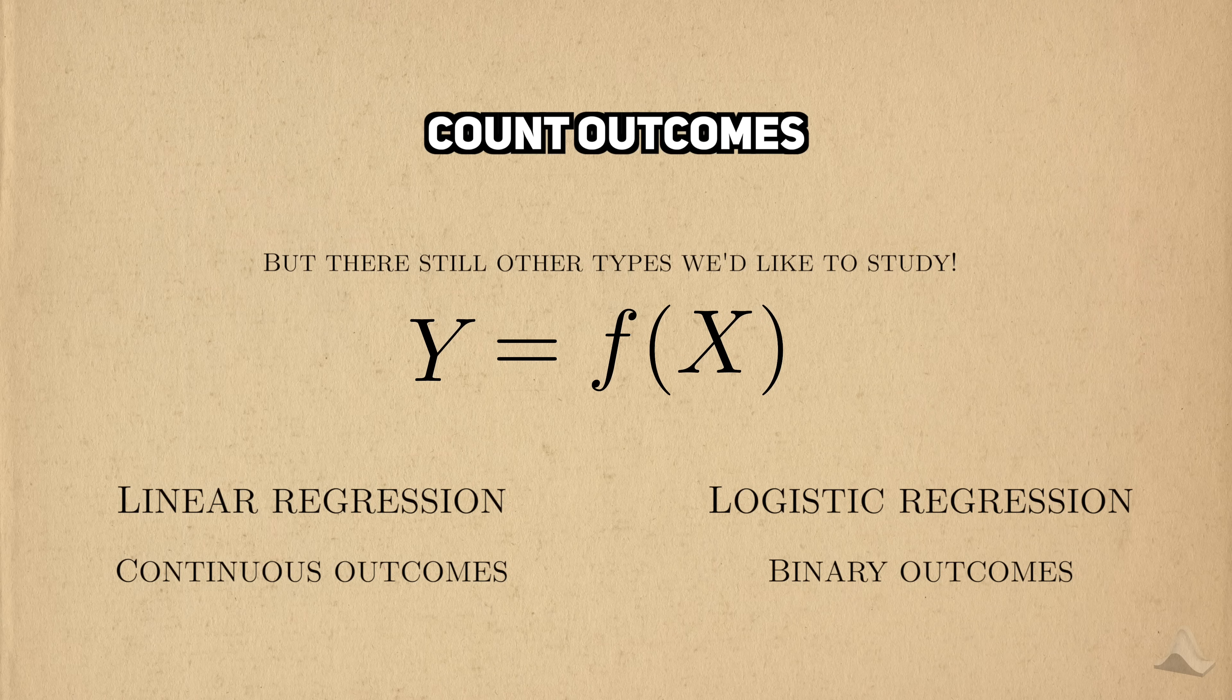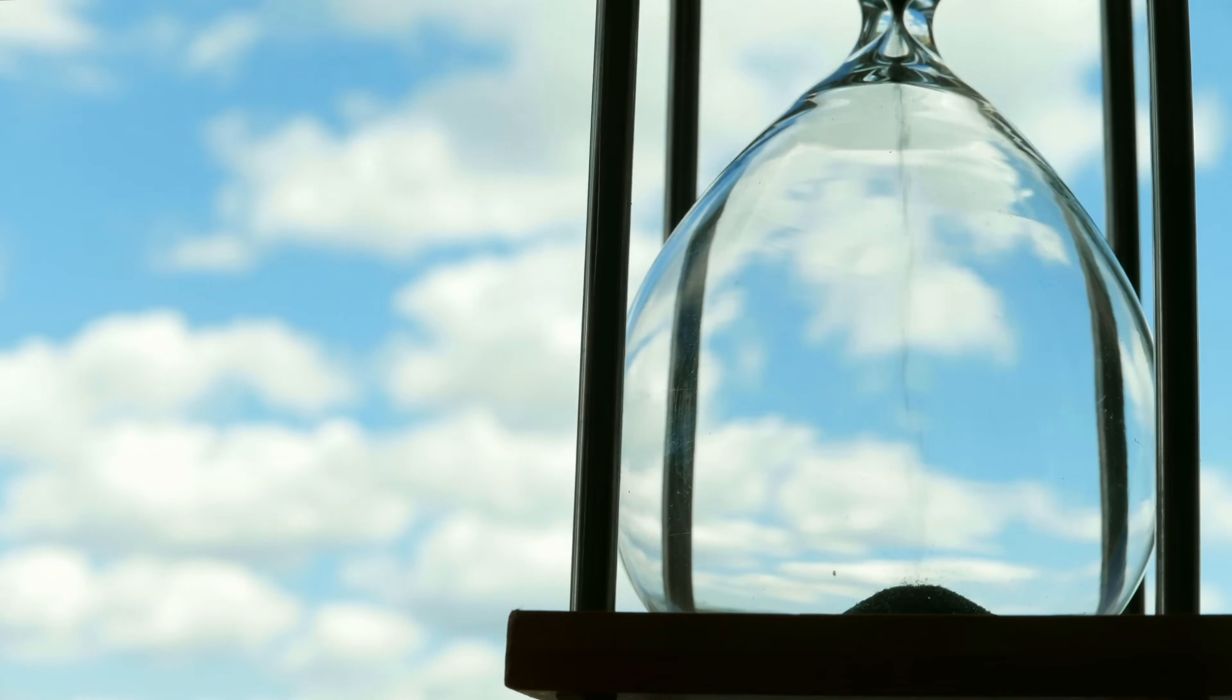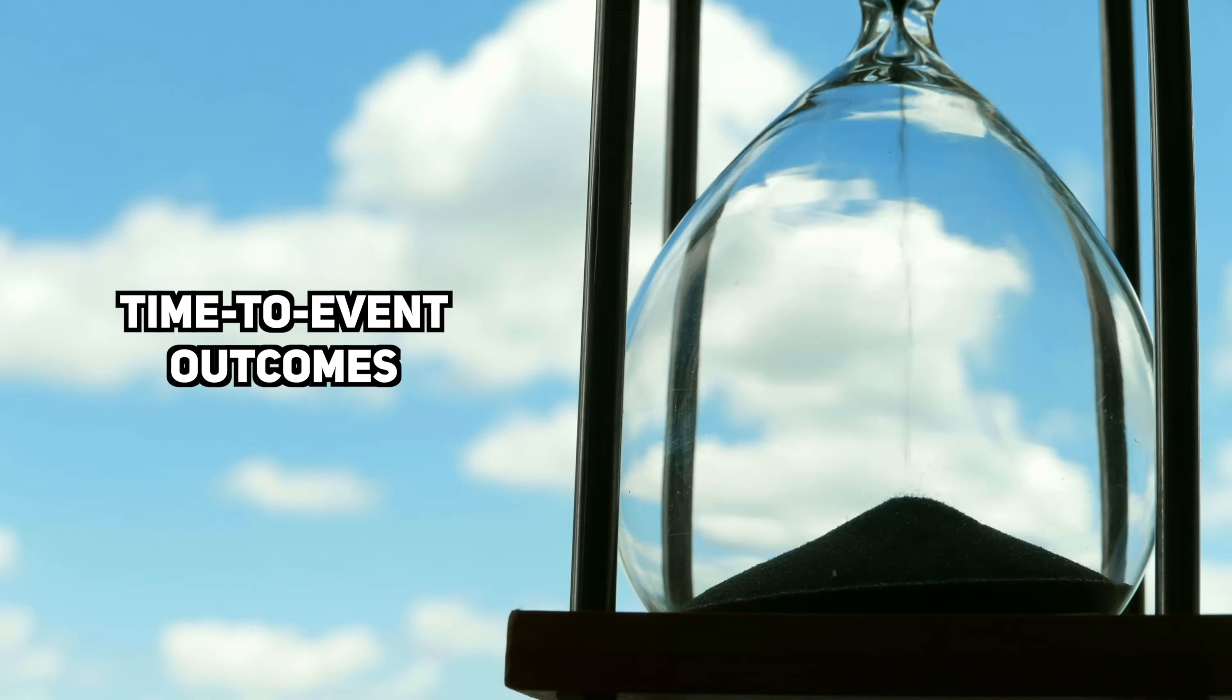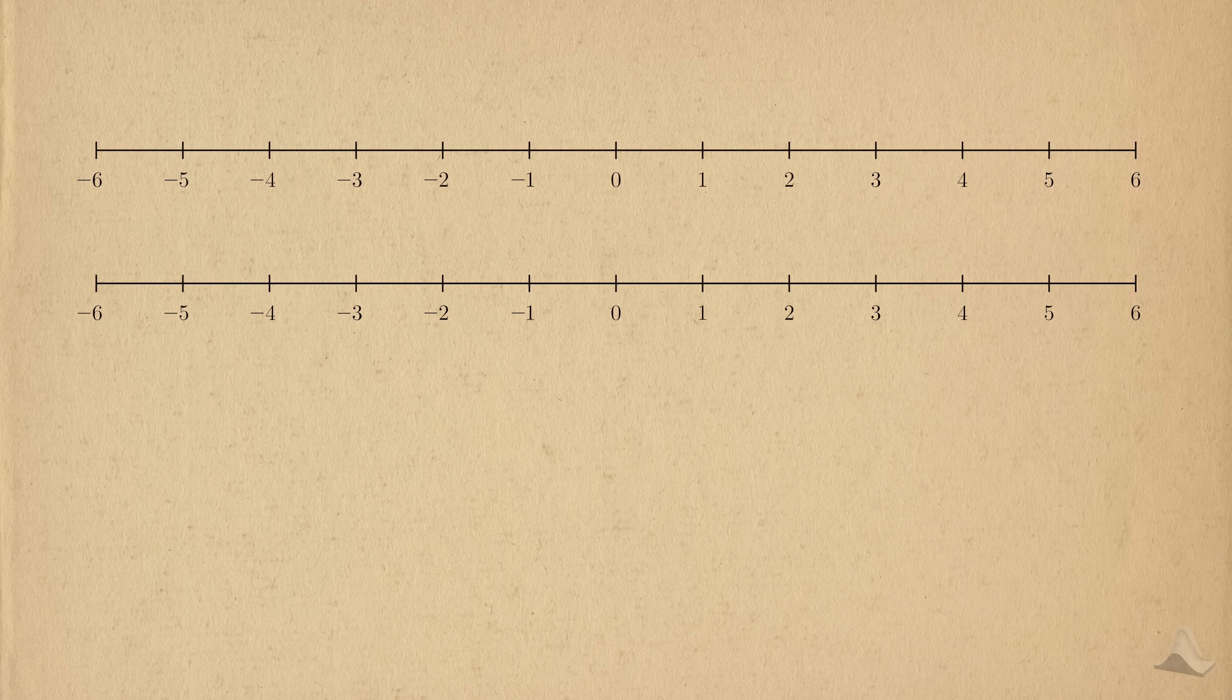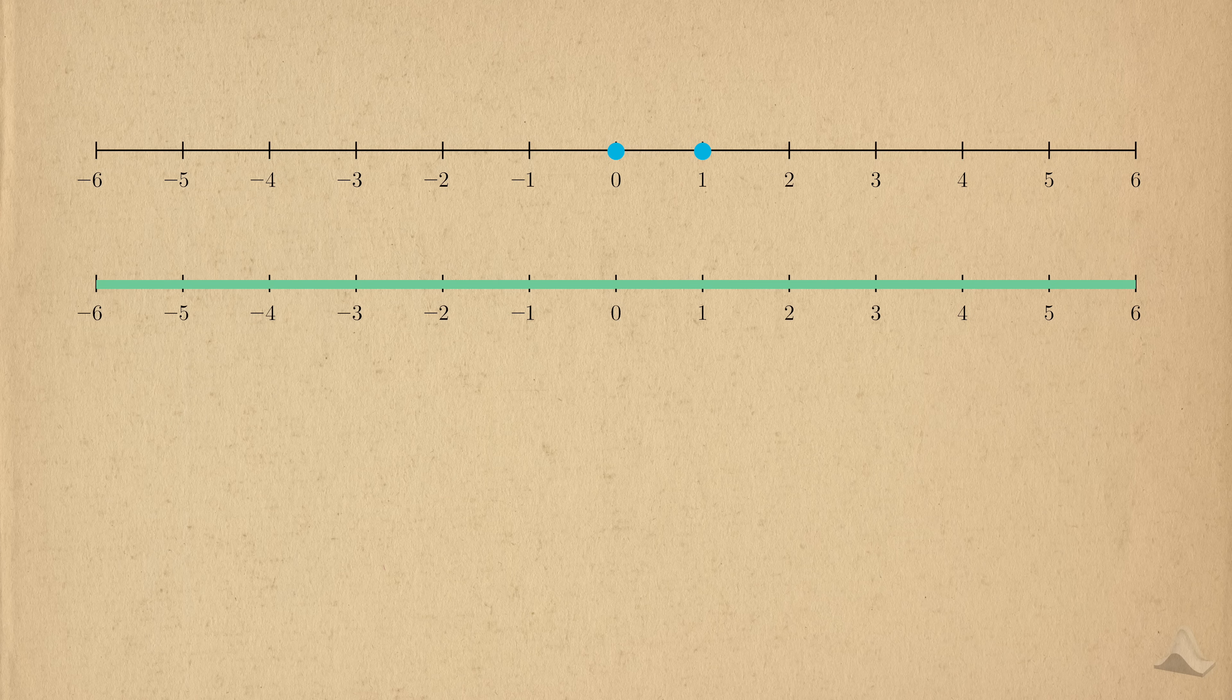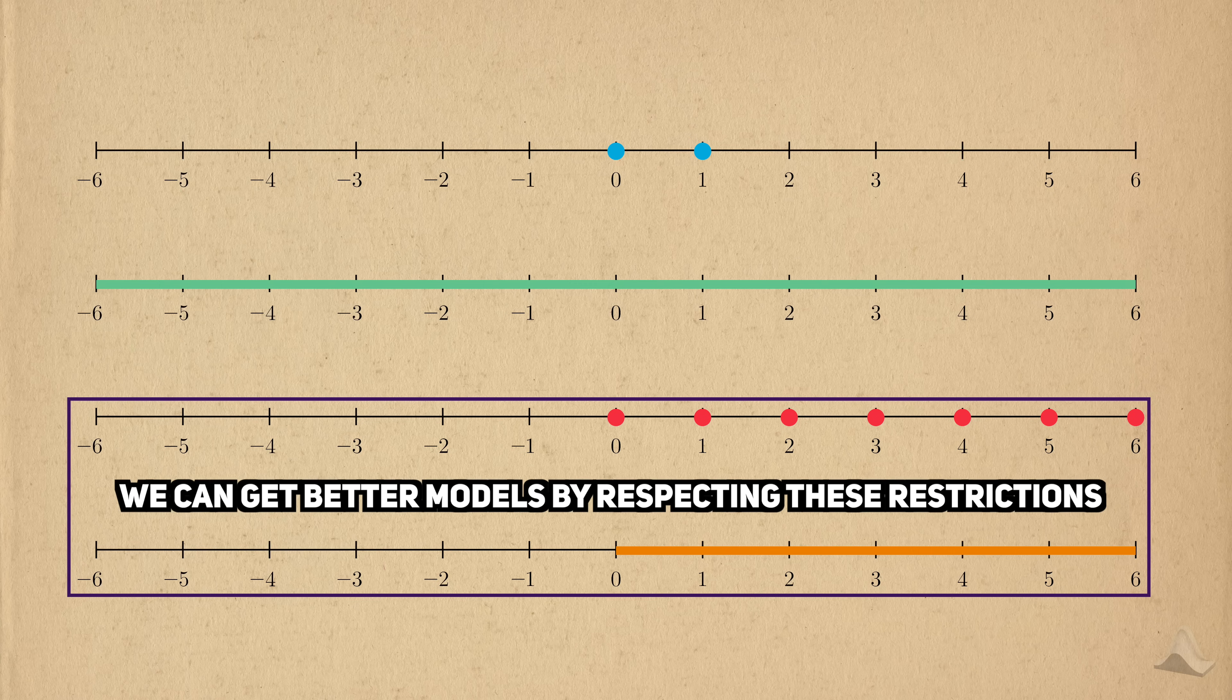For example, there are count outcomes. Think number of accidents or number of hospital visits. In biostatistics, time-to-event outcomes are incredibly important. An example that we all know is how much time we have left to live. What makes these outcomes different from continuous or binary outcomes is the possible values that they can take. Count outcomes can only be whole numbers, and time-to-event outcomes can only be positive real numbers. We could try to model both of these with a normal distribution, but these ultimately would only be approximations. We can get better approximations by respecting the constraints on the values these outcomes can take.